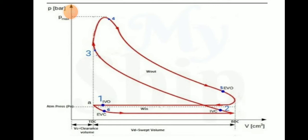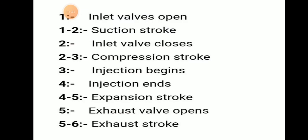Point 5 represents the exhaust valve opening. Then from 5 to 6 is the exhaust valve stroke. These are the basic strokes shown in the actual PV diagram of a 4-stroke IC engine. Let's discuss each in detail.